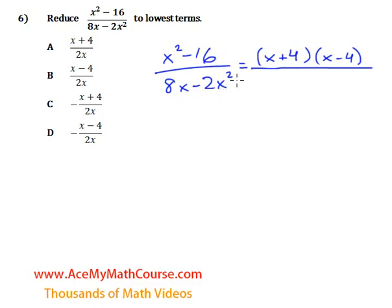What about down below? Can I factor this? Yes, I can. Well, let's factor out a 2x. That is the greatest common factor here. 8x divided by 2x is 4, and negative 2x squared divided by 2x is negative x.